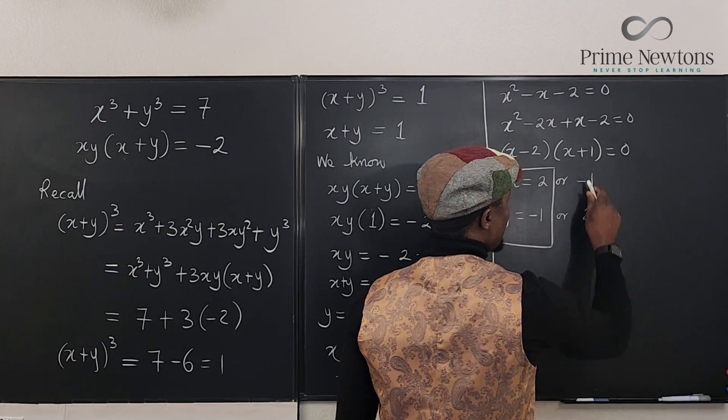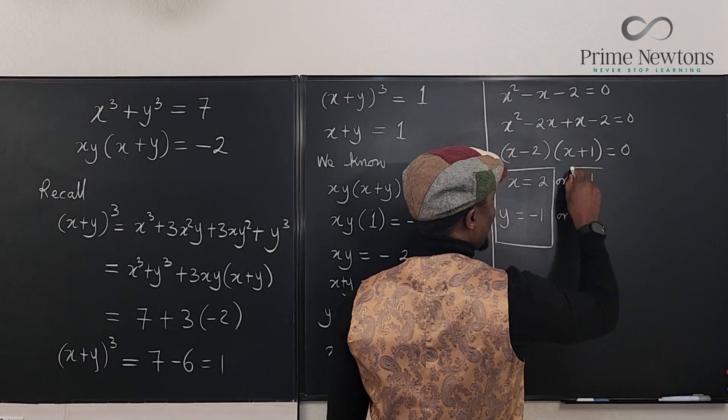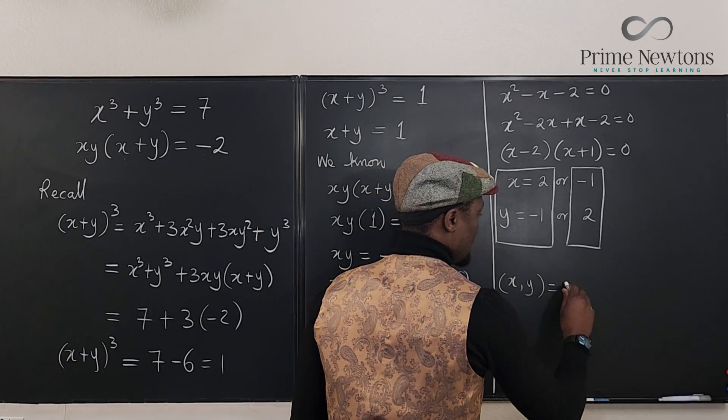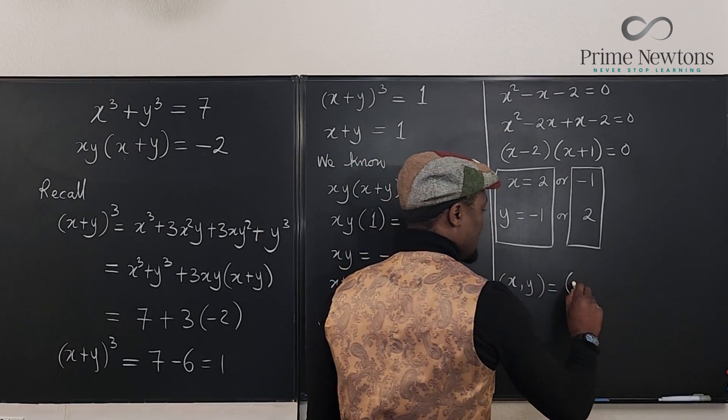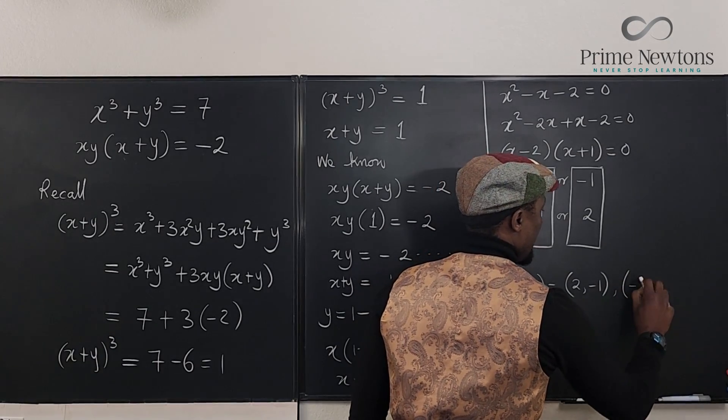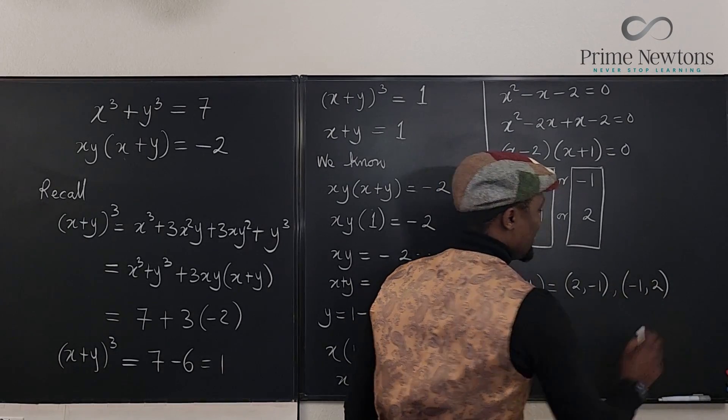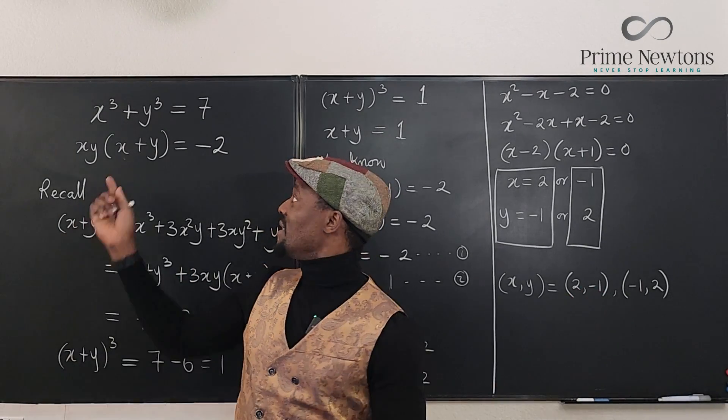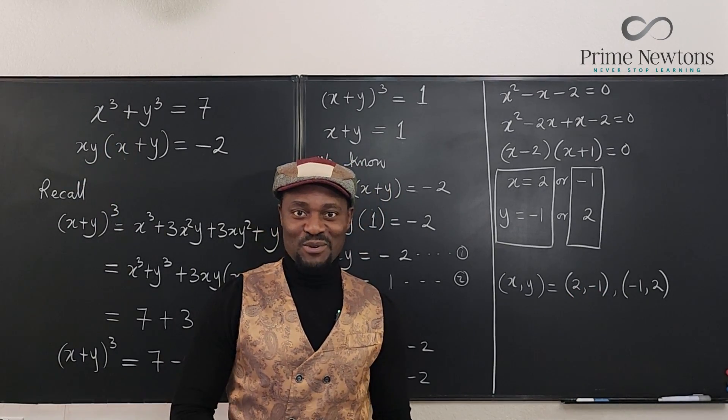So as you can see, this boxing is terrible. x, y will be equal to the set of x is 2, y is minus 1, and x is minus 1, and y is 2. Because of the symmetric nature of the problem. Well, this is what you call a symmetric system of equations.